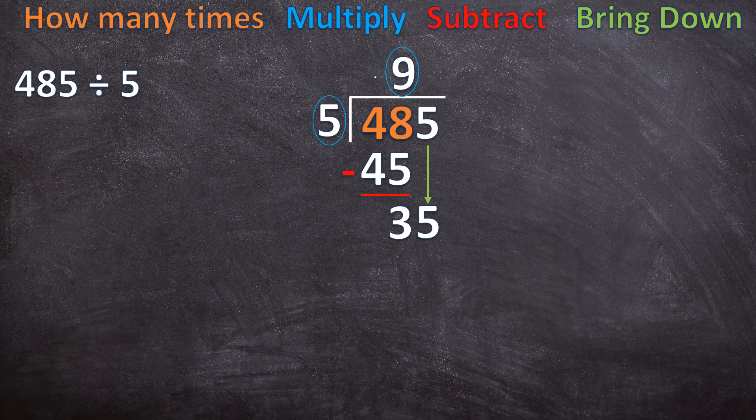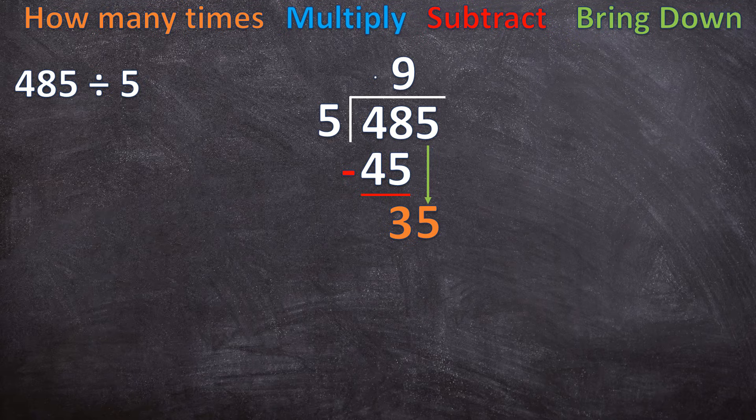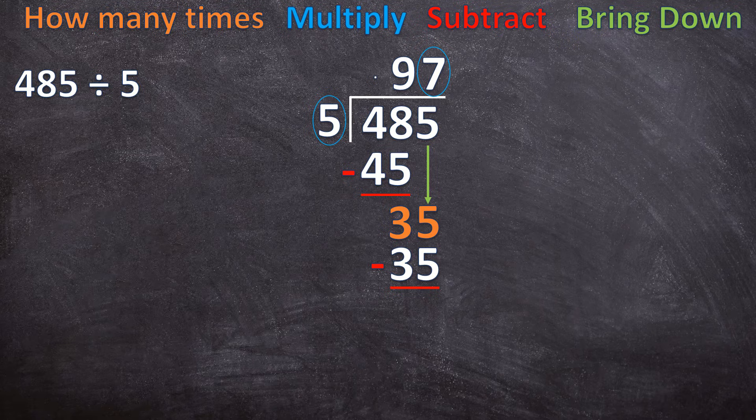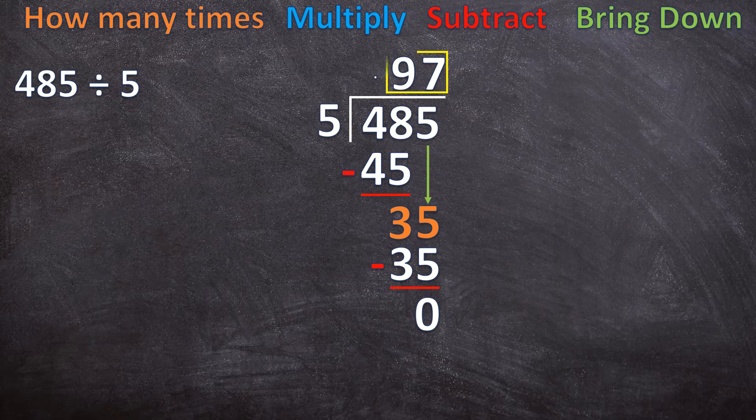So now what's the next step? We start all over again. So can five go into 35? Yes. How many times? Seven times. And now the next step, seven times five is 35. And now in the next step, we subtract. So what's 35 minus 35? That will be zero. There's nothing else to bring down, and we ended at a zero, so there's no remainder. So our answer is 97.